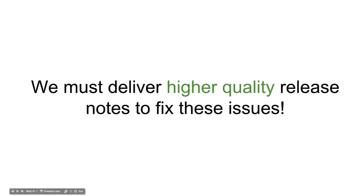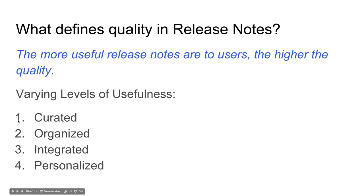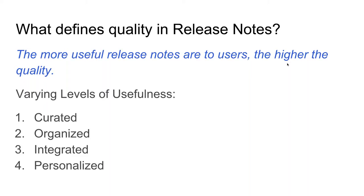In order to fix these issues and gain the benefits of better customer retention and higher reputation, we have to deliver higher quality release notes. That raises the question of what really defines high-quality release notes. We've been thinking about this for a couple of years and believe it revolves around usefulness to end users. We can break these levels of usefulness into four levels of maturity: curated, organized, integrated, and personalized.